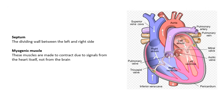A couple more bits. The septum is the dividing wall between the left and the right side of the heart — you've actually got a septum dividing your nostrils too. Myogenic muscle: this basically means that the muscles of the heart contract due to signals which come from the heart itself. Most muscles in your body are controlled by your brain, but the signals that make the heart beat come from the heart. If you cut somebody's heart out, the heart would keep beating for a while because the signals come from the heart itself.